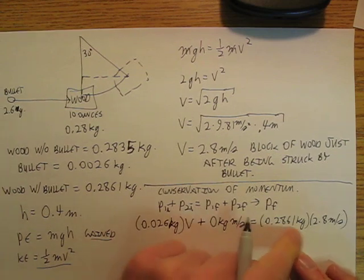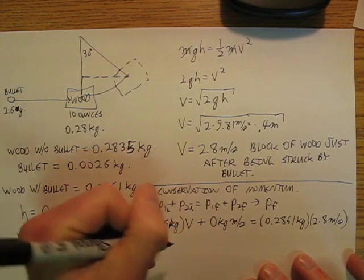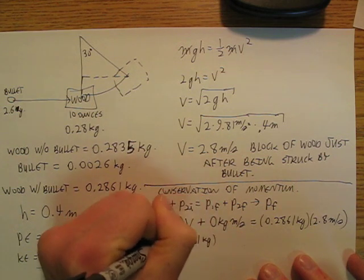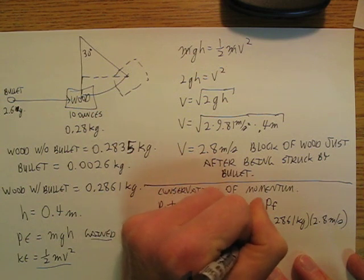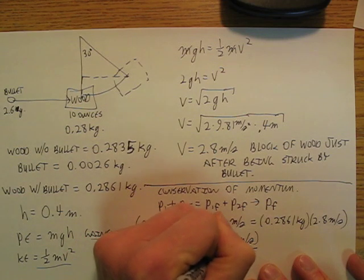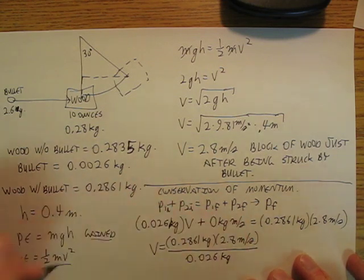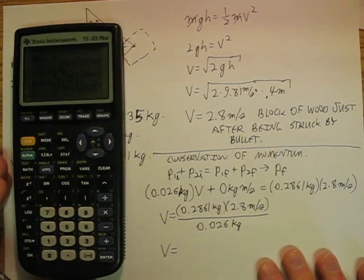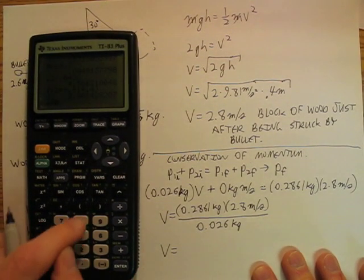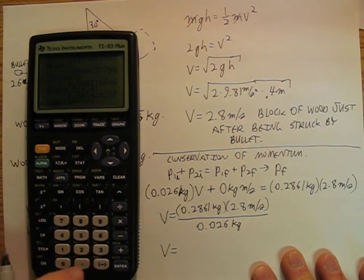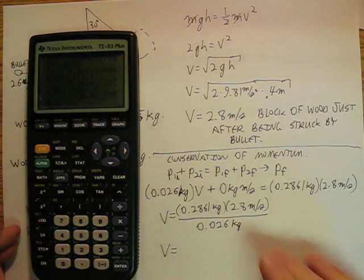And so if I do that all out, v is going to be 0.2861 kilograms times 2.8 meters per second divided by 0.026 kilograms. So the velocity of that bullet when it struck the wood should come out to be 30.8 meters per second.